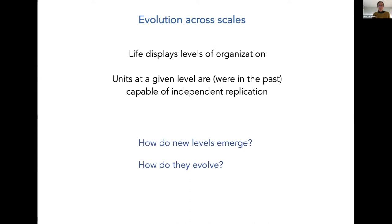I guess everybody agrees that life is organized in levels, and these levels some of them seem to be sort of self-evident. What is really typical of identifying a level as a relevant unit for evolution or for biological organization is that a level is given a form of replication that is either independent today or is believed to have been independent at some point in the past.